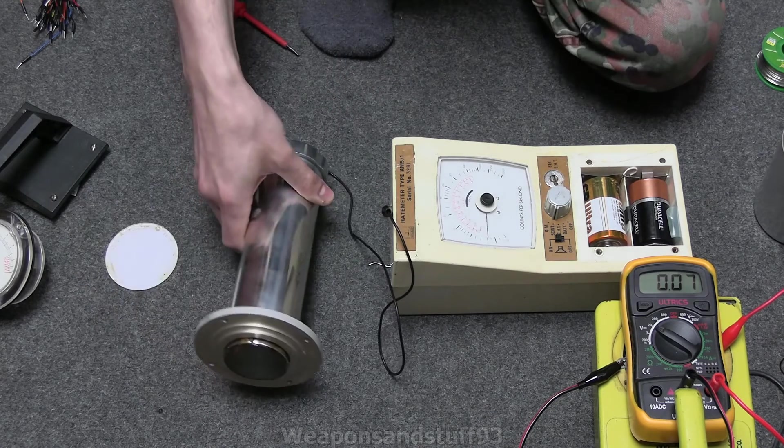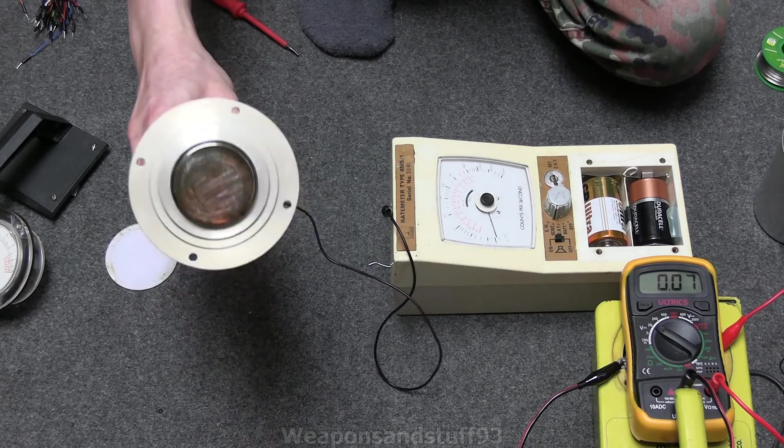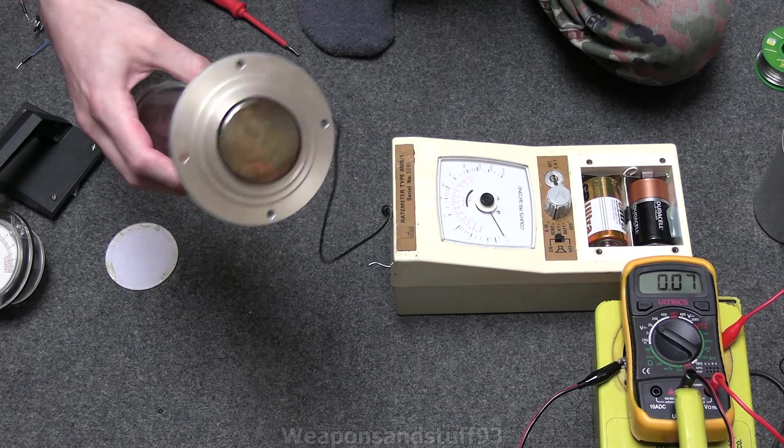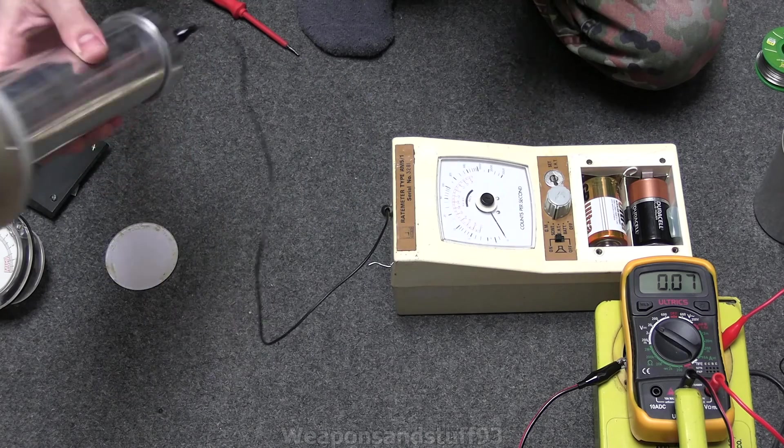But yeah, I'll get around to that for a later video at some point. But there you go. Big, cool aisle for scintillator. That should work fine with a rate meter once I get the cables adapted properly to do it.